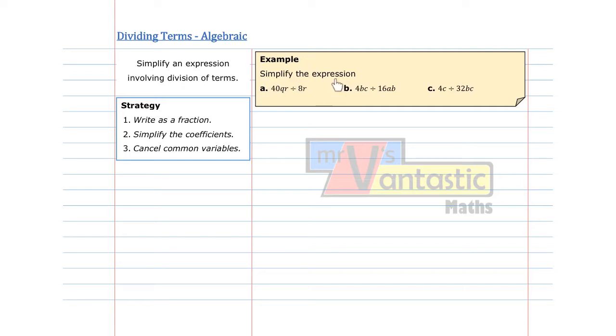We want to simplify the expression 4DQR divided by 8R. Now when we do these problems we start by rewriting the problem into fraction form. So 40QR will become our numerator and 8R will become our denominator.